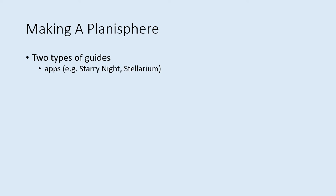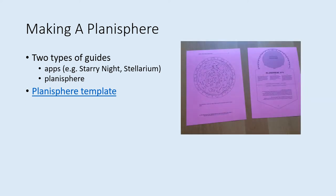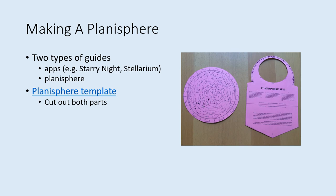An alternative is to create a planisphere. These can be purchased online, or you can make your own. Here is a link to a template you can print out and make. Print out both the template pages, and cut out the star wheel and body. It works on paper, but if you can print it onto thin card stock, that's more stable. Cut out both parts, and don't forget to cut out the gray part of the body.